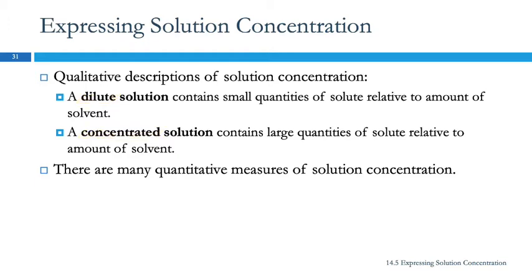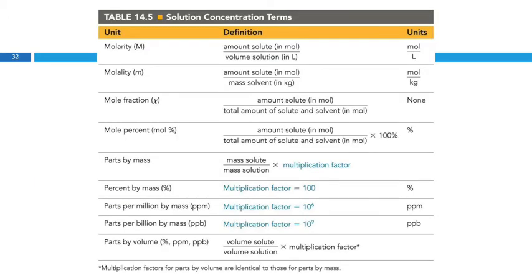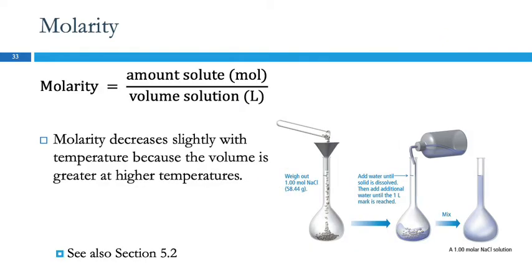And then there's a whole bunch of quantitative terms — and this table might be a useful reference as you are trying to do some of the homework problems. So, molarity — we talked about molarity back in Section 5.2. It's the amount of solute in moles divided by volume of solution in liters. Here's an illustration of how you would make a one molar solution of sodium chloride.